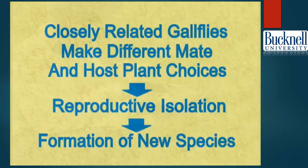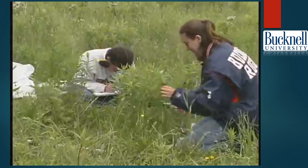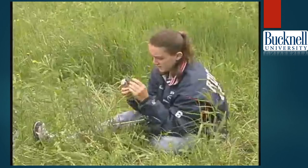Our future work will continue to examine the ways in which new species form. In particular, we will look at additional host shifts by goldenrod gall flies and tumbling flower beetles to see if these host shifts lead to speciation as well. As we have shown, this is often the way that science progresses — building upon earlier work, step by step.